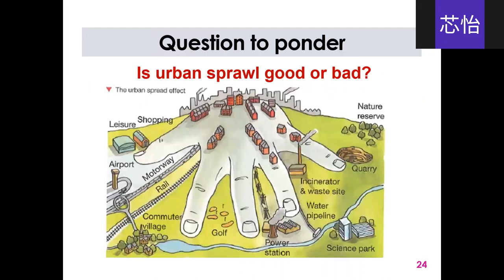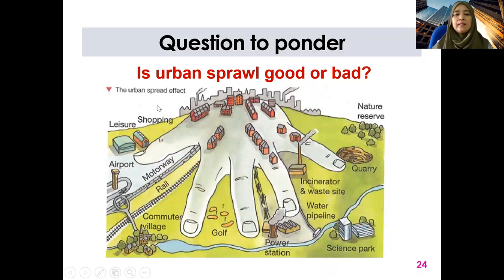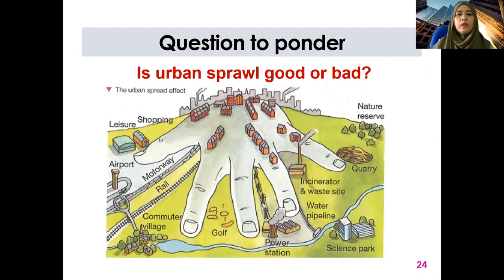Now, the question is: is urban sprawl good or bad? We have learnt before about externality. The right answer is both — it can be good, it can be bad as well. So there are positive externalities as well as negative externalities related to sprawl.